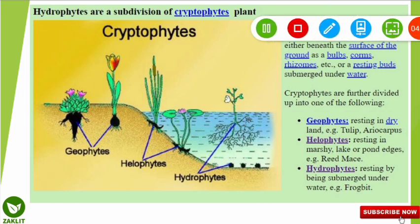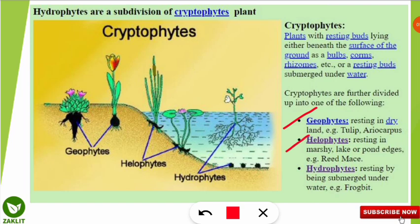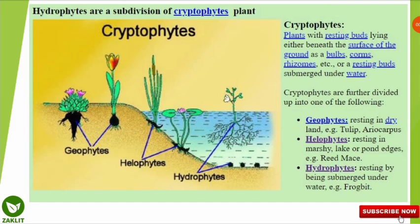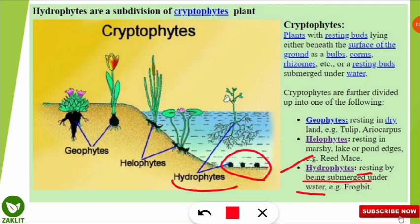Cryptophytes are further divided into three categories: geophytes, helophytes, and hydrophytes. Geophytes have their resting buds in dry land beneath the soil surface — examples are tulip and Arisarum. Helophytes, as we discussed, are in marshy land or lake and pond edges — an example is reed mace. Hydrophytes have their resting buds completely submerged under water — an example is frog bit. The simple difference between hydrophytes and helophytes is that hydrophytes are fully submerged whereas helophytes rest in the marshy area.